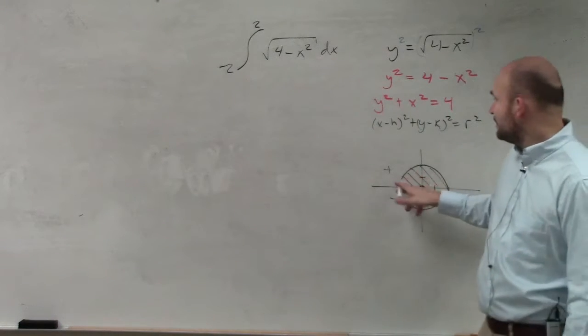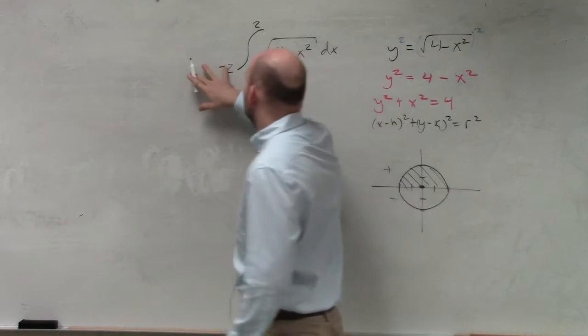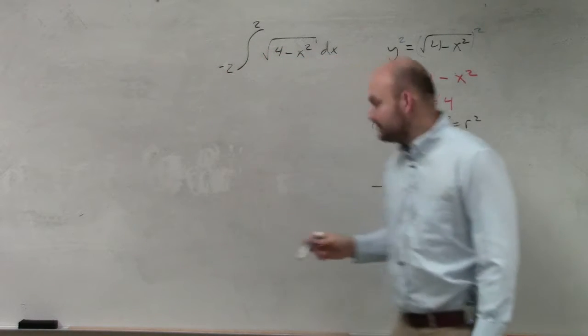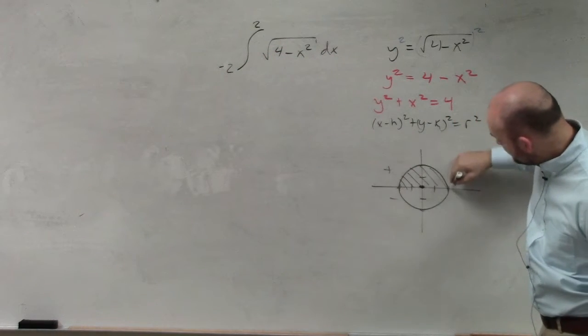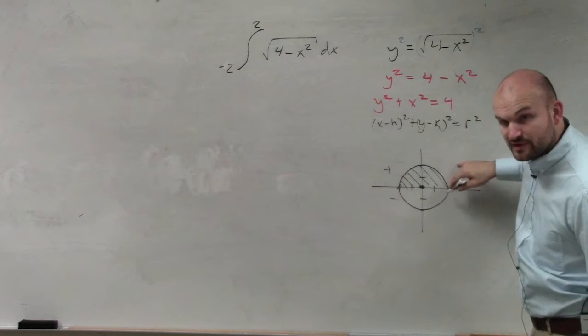All right? And then again, we are evaluating from negative 2 to 2. So we're going from negative 2 to 2, and that's where we want to be able to figure out the area.